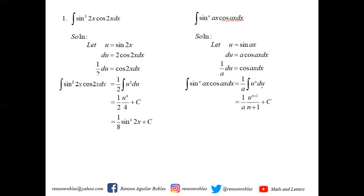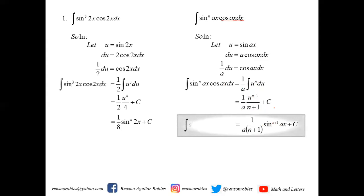Integrating, the integral of u to the n du is u to the n+1 over n+1 plus c. We then have 1 over a times (n+1), and expressing u as sine ax raised to n+1 plus c. Therefore, we can generalize that the integral of sine to the n of ax times cosine ax dx equals 1 over [a(n+1)] times sine to the n+1 of ax plus c. We can apply this formula to integrate sine cubed 2x cosine 2x by identifying n and a.